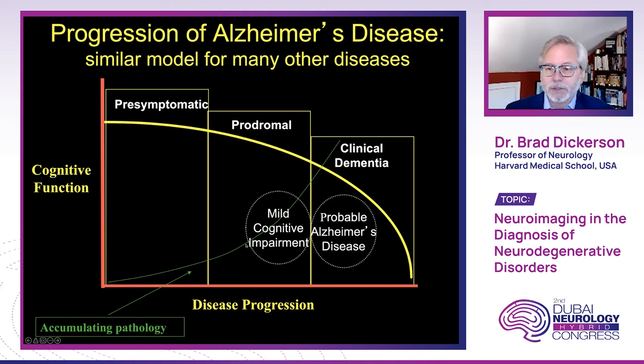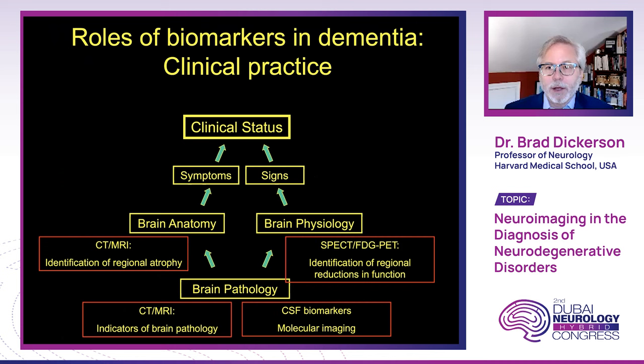In terms of imaging and other biomarkers in clinical practice, I like to think about it as ultimately helping us understand what the patient's clinical status is from the perspective of symptoms and signs, which arises as a result of changes in brain anatomy and physiology — which is what the imaging can show us. Ultimately, this comes from brain pathology, which we're increasingly developing molecular biomarkers for that can be measured through imaging.